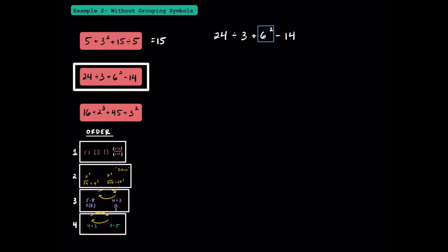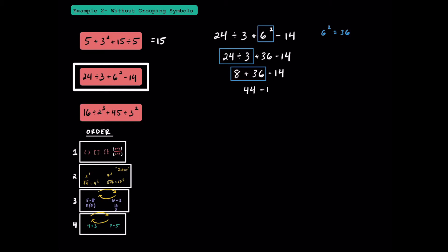Here in this next one, we're going to start off with our exponents again. 6 to the second power is the same thing as 6 times 6, which is equal to 36. Next, we're going to divide 24 by 3. 24 divided by 3 is going to be 8. Since addition and subtraction are equally important, we're just going to go from left to right. 8 plus 36 is going to be 44. That's the answer to this expression.